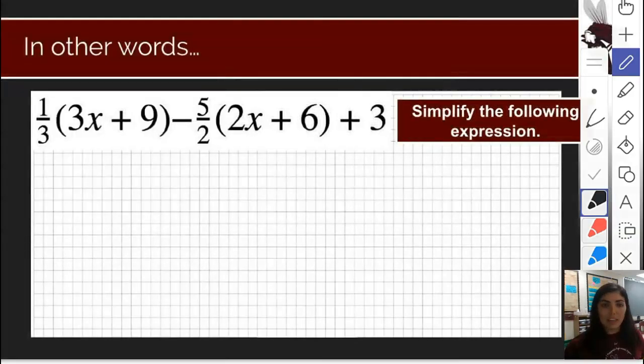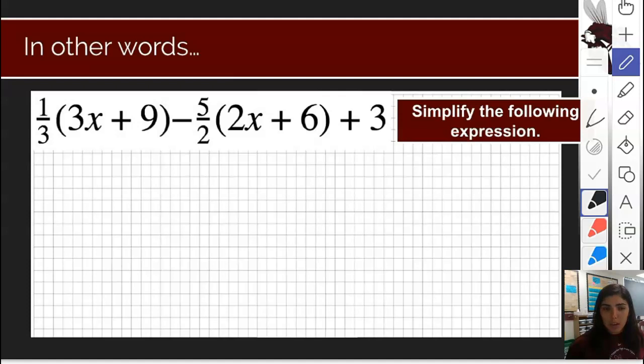So what this might look like is the following, and notice there's no equal sign, so we're not solving an equation, we're just simplifying an expression. But we're going to be needing to use distribution to do so. If we have one third times three x plus nine minus five halves times two x plus six plus three, we're going to need to start by using distribution to simplify this expression.